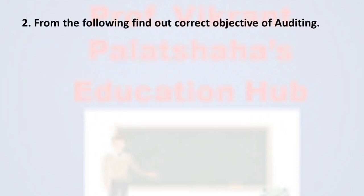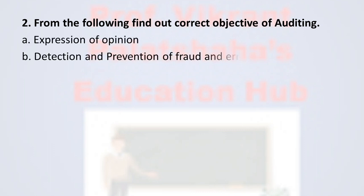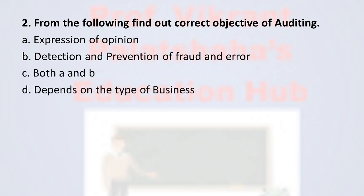Question number two: from the following, find out the correct objective of auditing. Option A expression of opinion, option B detection and prevention of fraud and error, option C both A and B, and option D depends on the type of business. The correct option is option C, both A and B — that is, expression of opinion as well as detection and prevention of fraud and error.